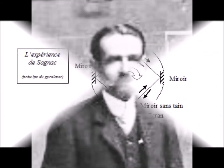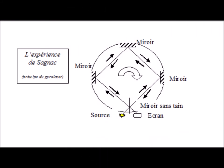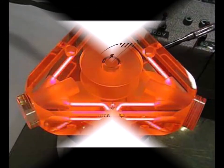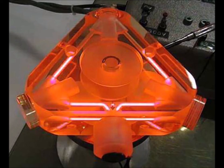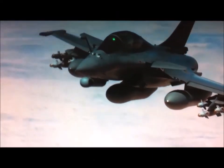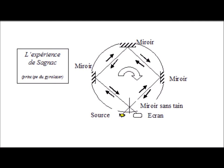Conversely, in the Sagnac experiment, the disc carrying the mirror rotates relative to the medium of space and the rotation can be detected. This is the principle of laser gyros. They are installed in all planes. No explanation of Sagnac's experiment by general relativity has been found to date.